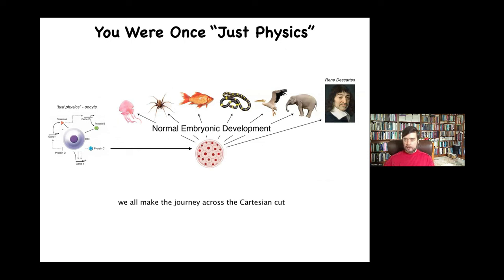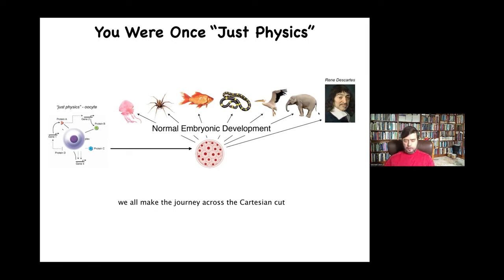This idea that we all start life as a single cell — a quiescent oocyte — and people look at it and say, well, this is a little blob of chemistry and physics, it is not cognitive, it's just chemistry and physics. But slowly and gradually we become one of these things — a deeply thinking human that's going to make claims about being more than a machine. And so the thing about developmental biology is that it is the most magical of all sciences.